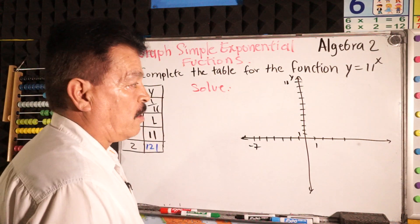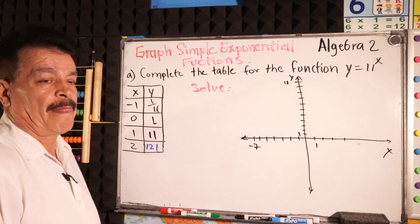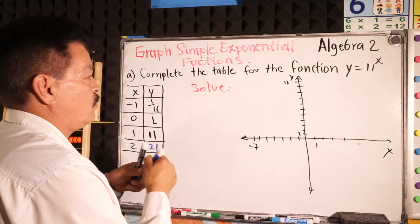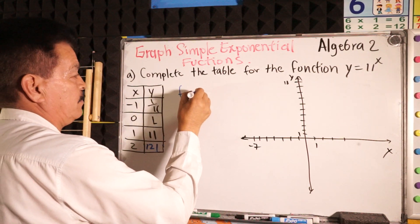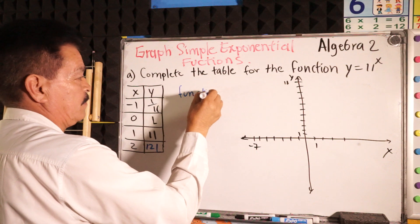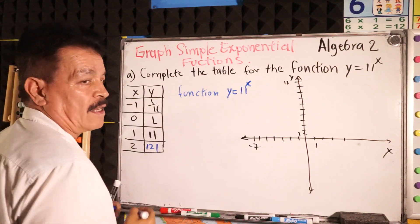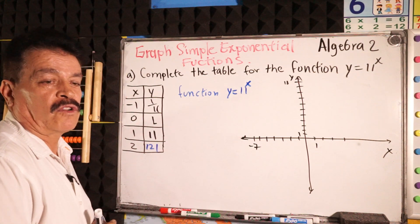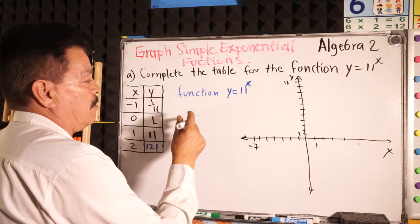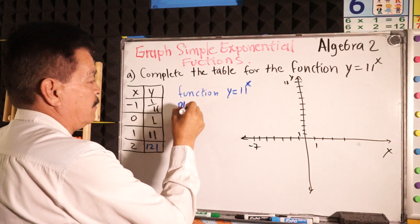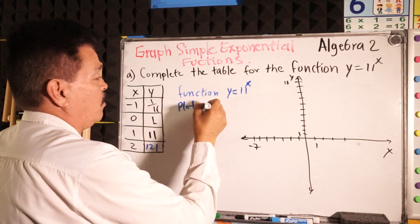Before making the graph, our function is y equals 11 to the x. We have to plot the points here to make the graph.